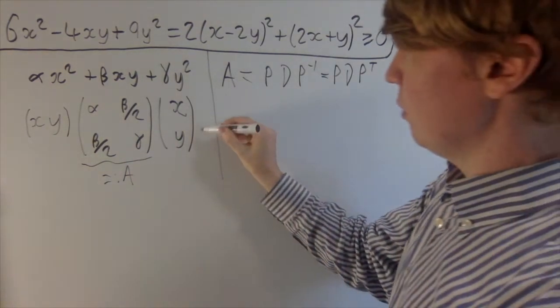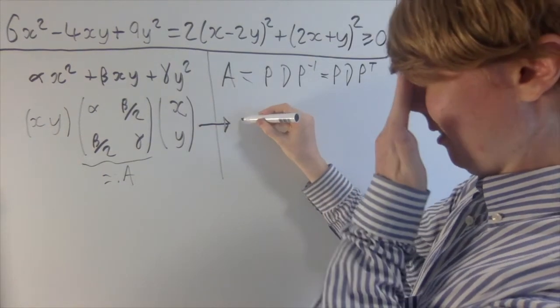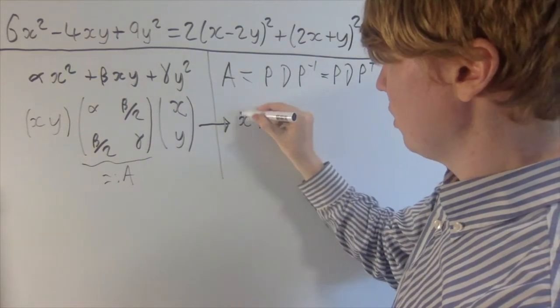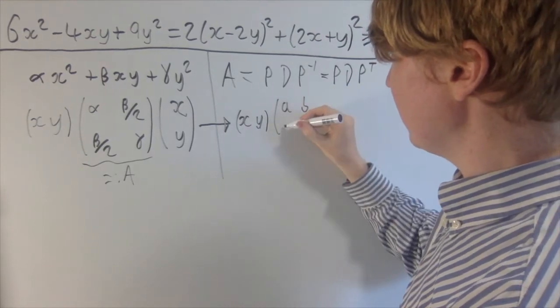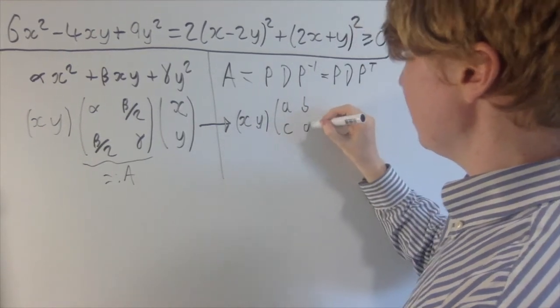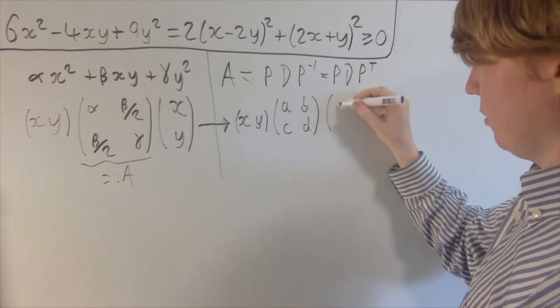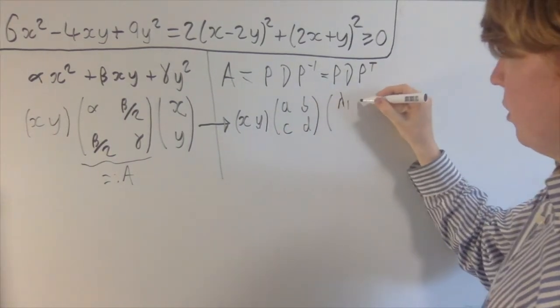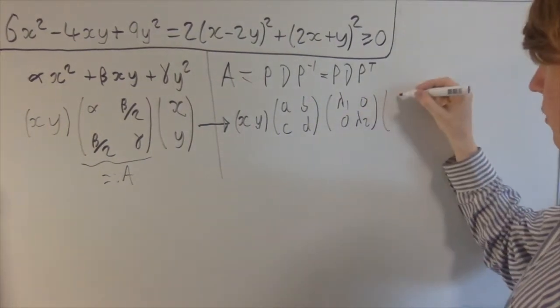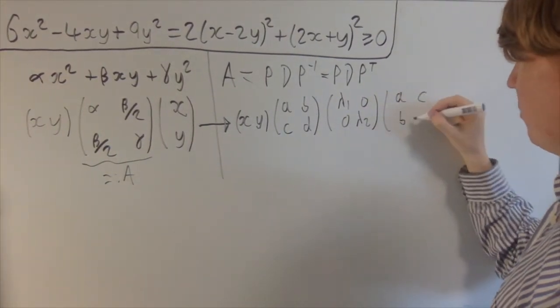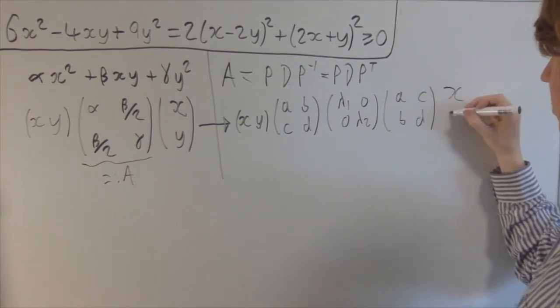So now we want to try and apply this. What does this tell us? Then you've got x, y multiplied by, we'll call P matrix A, B, C, D, or you know that B is equal to C. You've got lambda 1, lambda 2, your eigenvalues. We've got A, B, C, B, D here. And this is all multiplied by x, y.